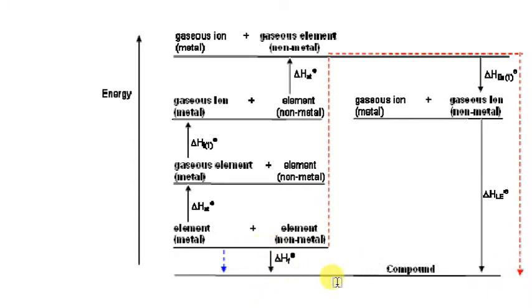So this route - we've already reached the compound. So this route here is another route. This route means we start adding energy up to here. So we start with this element here, the metal. We start with metal. Metal - what do we need to do? We do atomization, make it a gas. After it's a gas, then we do ionization. Ionization - it becomes a gaseous ion.